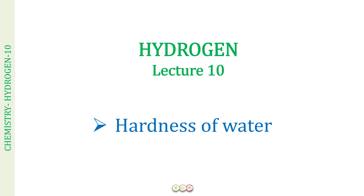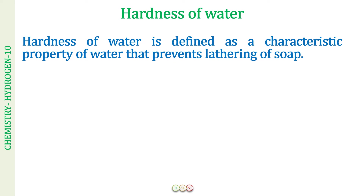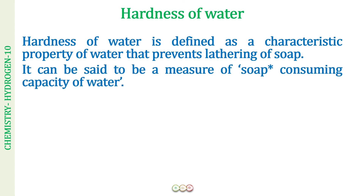So let us learn today what is hardness of water, what are the causes for the hardness of water, and how we are going to remove that hardness. Hardness of water is defined as the characteristic property of water that prevents the lathering of soap. If the soap is not producing lather, the problem is the water. This can also be defined as a measure of the soap consuming capacity of water, because if the water is hard, we keep on rubbing that soap to produce lather, consuming more soap.